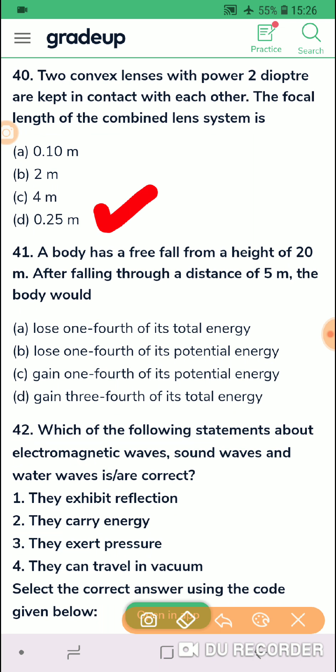Question 41. A body has a free fall from a height of 20 meters. After falling through a distance of 5 meters, the body will be. So if it is falling 5 meters, it is still undergoing its motion. So that means only one-fourth of the potential energy it has lost and that has got converted into the corresponding kinetic energy. So let us read the options what they have given. Lose one-fourth of its total energy. Absolutely wrong. How can it lose its total energy? Lose one-fourth of its potential energy. This is correct. Option B is correct.